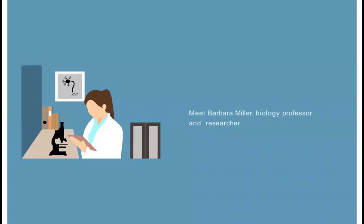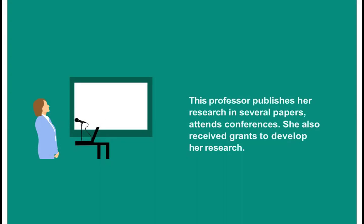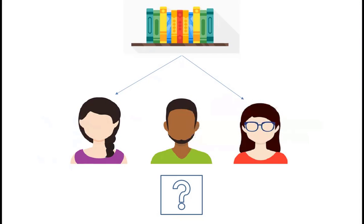Let's first talk about why you should create an ID such as ORCID. Imagine this is Barbara Miller, a professor and researcher. This professor publishes her research in several papers and attends conferences. She also received grants to develop her research. But she faces some challenges when her institution, grantors, and other researchers try to find a comprehensive list of her accomplishments.